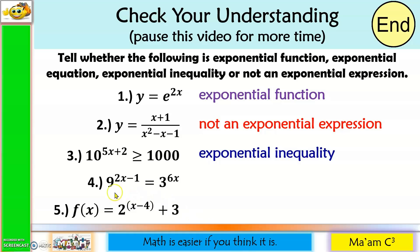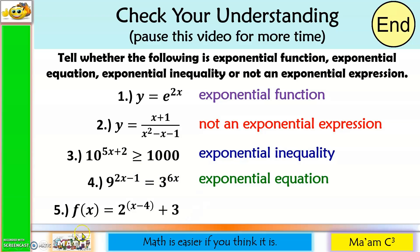For number four: I have a constant with an exponent that contains a variable, and also on the other side a constant raised to an exponent that contains a variable, plus an equal sign. Therefore, this is an exponential equation. And last one: I have here f of x, equal sign, and a constant raised to an exponent that contains a variable. Therefore, this is an exponential function.